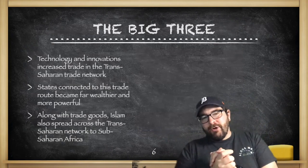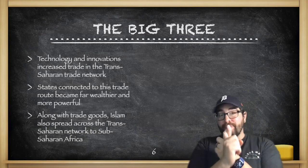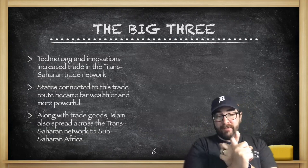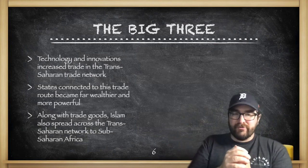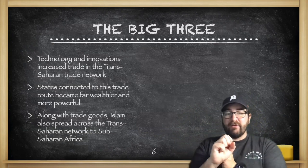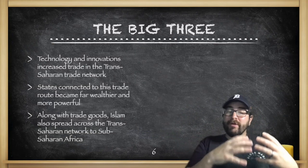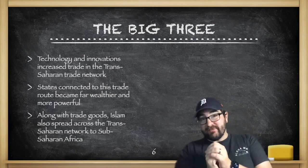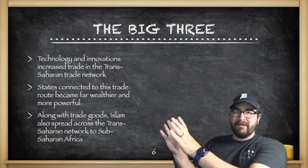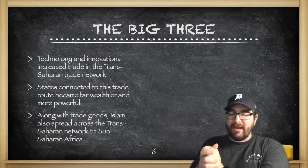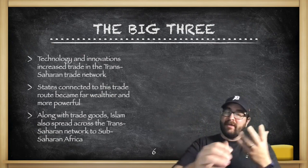So what do we need to know about the Trans-Saharan Trade Network? Technology and innovations in trade improved and increased the amount of trade going across this network during this period, which is the exact same thing we're seeing on the Indian Ocean Trade Network and the Silk Road as well. States connected to the Trans-Saharan Trade Network became far wealthier and more powerful. And along with trade goods, Islam also spread across this trade network into Sub-Saharan Africa, just like Islamic merchants spread Islam in the Indian Ocean Trade Network, and just like religions like Buddhism spread across the Silk Road.